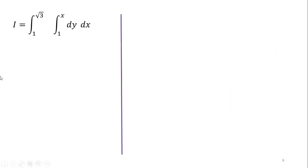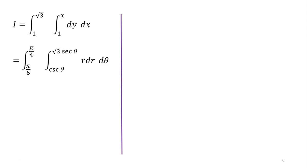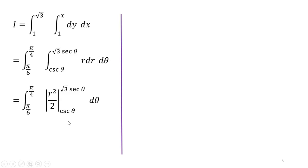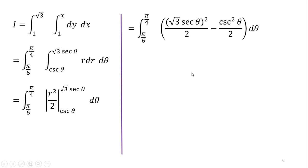We now convert the integral into a polar integral by replacing dy dx with r dr dθ. The limits of r are from cscθ to √3 secθ, and the limits of θ are from π/6 to π/4. Integrating r gives r²/2 evaluated at the limits. Applying upper minus lower limit: the upper limit substitutes r = √3 secθ giving (√3 secθ)²/2, and the lower limit substitutes r = cscθ giving csc²θ/2.